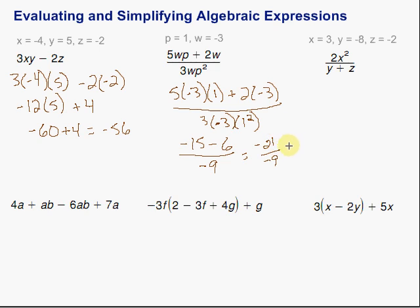Can we simplify that? Sure we can. The negatives cancel out and we can divide by 3 — dividing by negative 3 on the top and bottom of that fraction. Negative 21 divided by negative 3 is 7, over negative 9 divided by negative 3 is 3. We can leave it as the improper fraction 7 thirds.